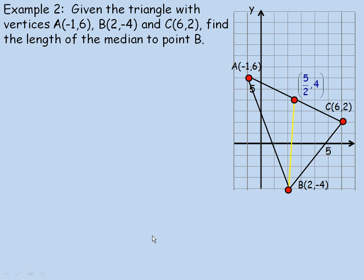Flipping over to the example on the second page, we're given this triangle with vertices A, B, and C. And we're asked to find the length of the median. This is actually from one of the previous lessons. We're actually asked to find the length from B to this midpoint over here. And the midpoint is already found for us. So we're asked to find a distance. So there's the distance formula. 5 halves, 4 and 2, negative 4 are the two points.